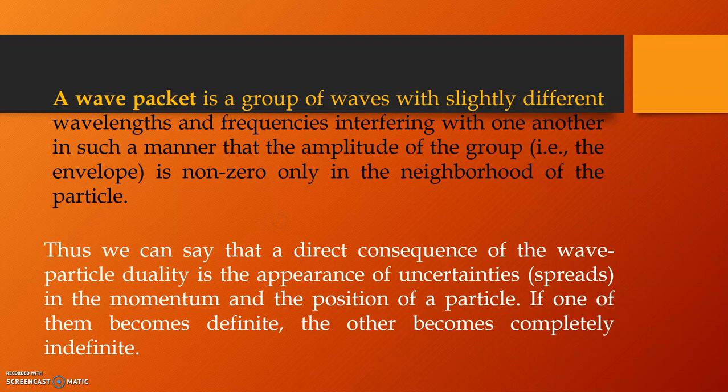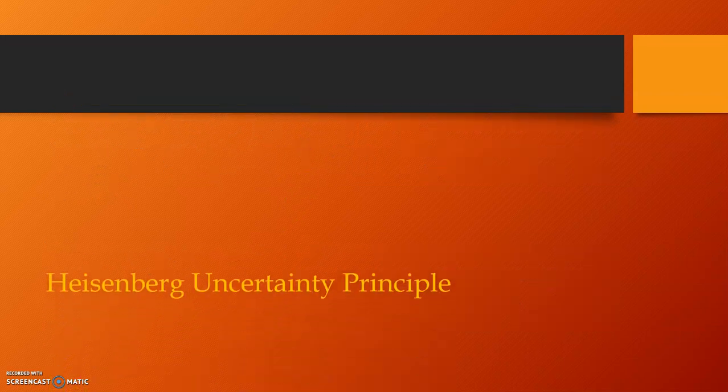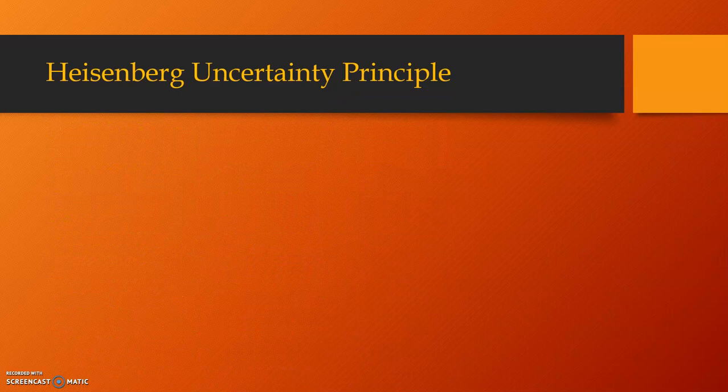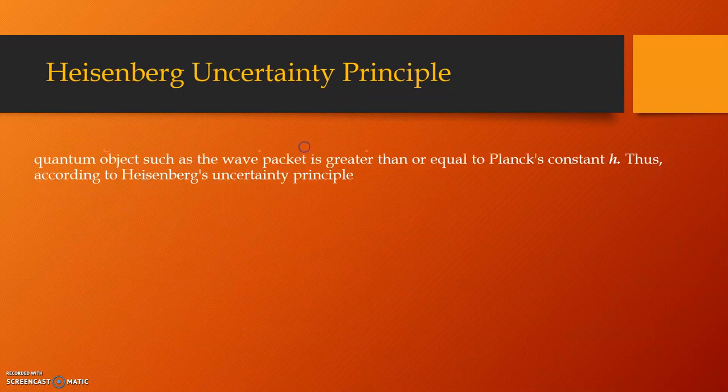Thus, we can say that a direct consequence of the wave-particle duality is the appearance of uncertainties in the momentum and the position of the particle. If one of them becomes definite, the other becomes completely indefinite. And, hence, the topic of this particular video comes up, the Heisenberg uncertainty principle.